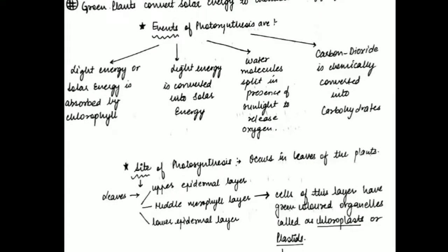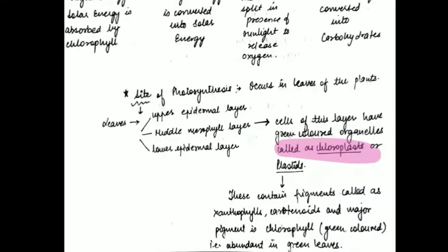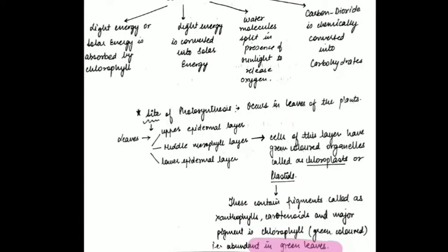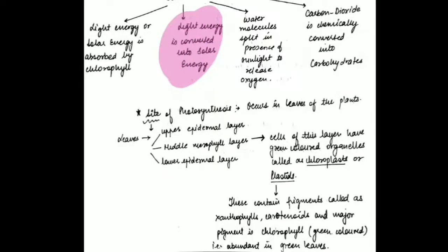The site of photosynthesis is the leaves of the plant. Leaves have three layers: upper epidermal, middle mesophyll, and lower epidermal. The middle mesophyll layer contains the green-colored organelles called chloroplasts, which are a type of plastid. Chloroplasts contain various pigments — xanthophyll, carotenoids, etc. — but the major pigment is chlorophyll, a green-colored pigment present in abundance. The solar energy is absorbed by the chloroplasts and converted into chemical energy.